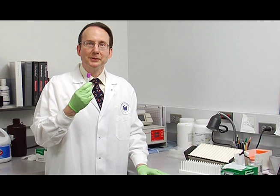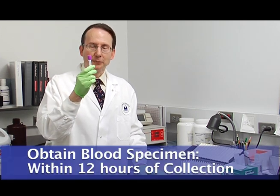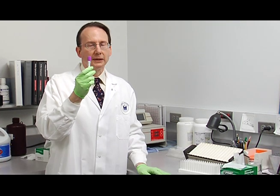The next step in performing a manual cell count is to obtain a blood specimen. This is an EDTA blood specimen. You want to get a specimen that's no older than 12 hours from collection.